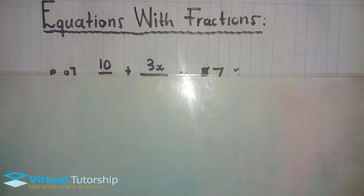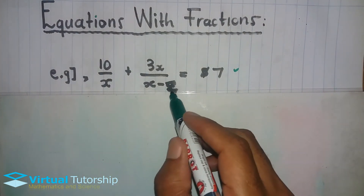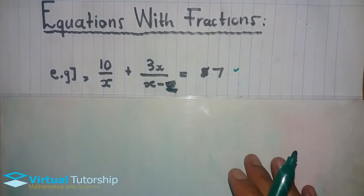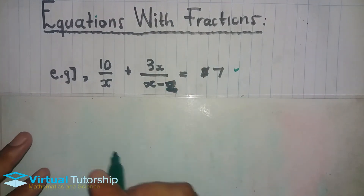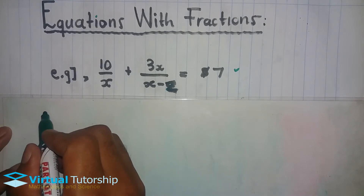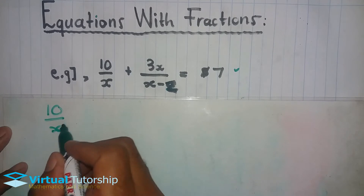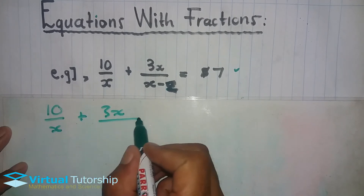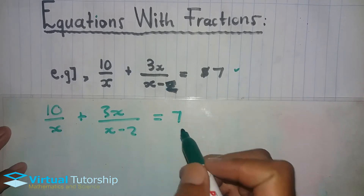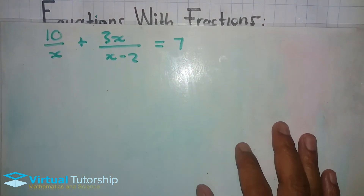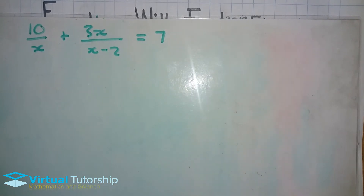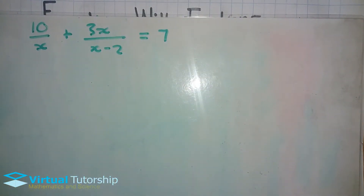Let's take the first example and try to solve this equation. It's going to be 10 over x plus 3x over (x minus 2) equal to 7. Whenever solving an equation that has a fraction, we first find the LCM — the Lowest Common Multiple.